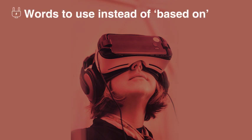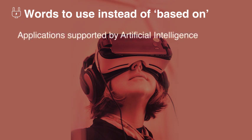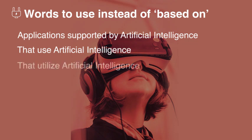Let's look at some expressions you can use instead of 'based on.' So instead of saying 'applications based on artificial intelligence,' you can say 'applications supported by,' 'applications that use,' 'products that utilize,' or 'products that are powered by' or 'products that incorporate.'